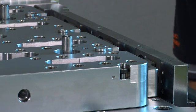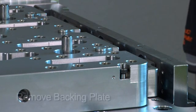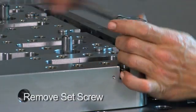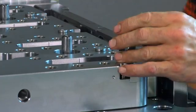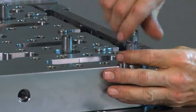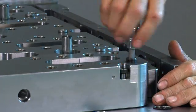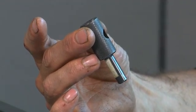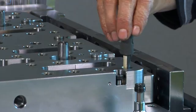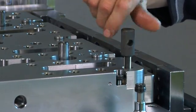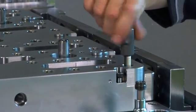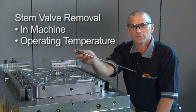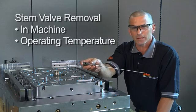Now I'm going to demonstrate how to remove a valve stem. First, we remove the backing plate, then we remove the set screw. Using the stem removal tool, insert and screw on the top of the valve stem and remove. This can be achieved while in the machine and at operating temperature.